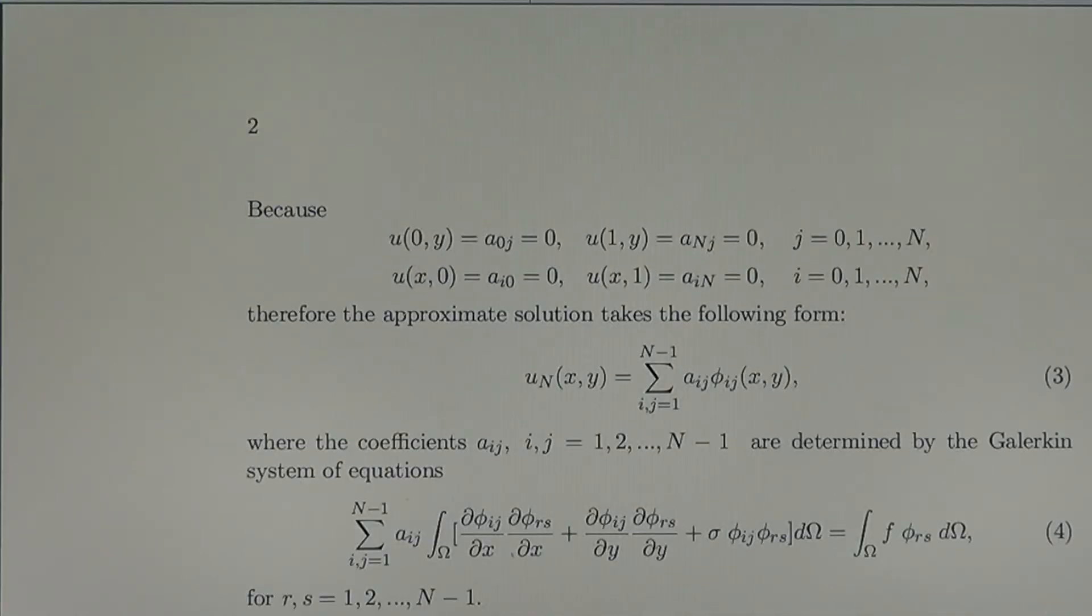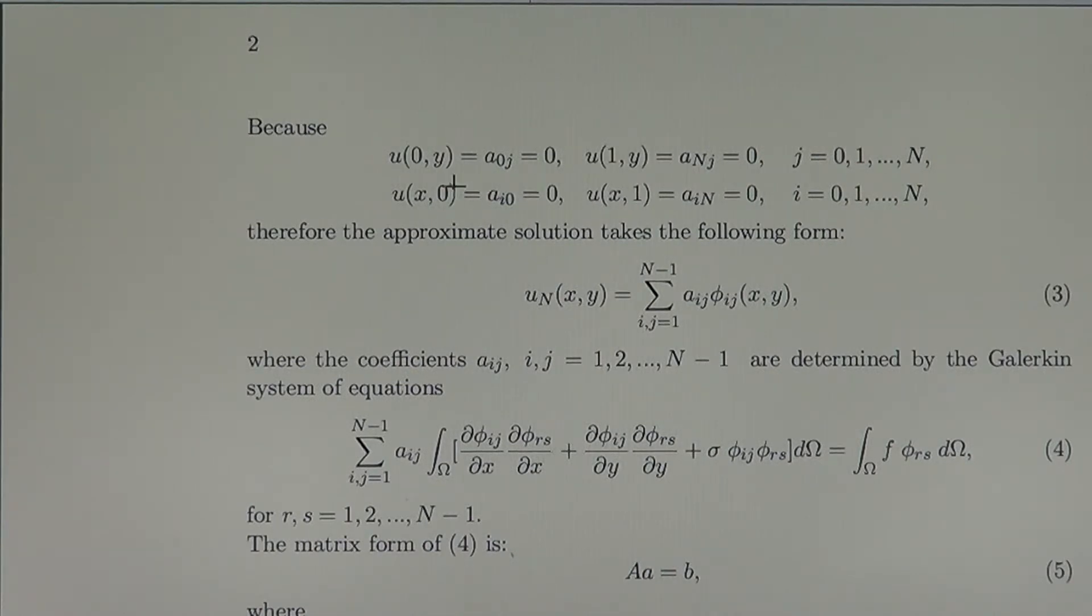Because we have boundary value conditions, from the boundary conditions straightforward we find that the coefficients with zero for all j are zero. And the coefficient at the point 1 for all y, when we have index N, are also zero. And the same on the other side of the square omega. So the form of the approximate solution is of this size.